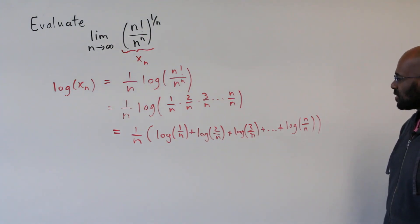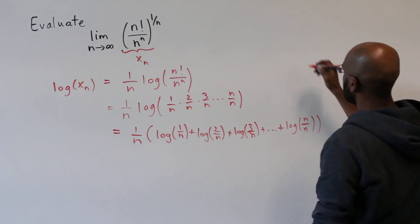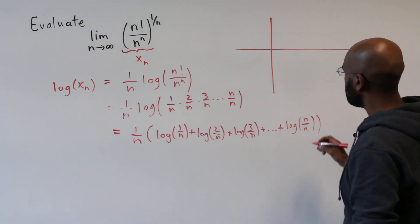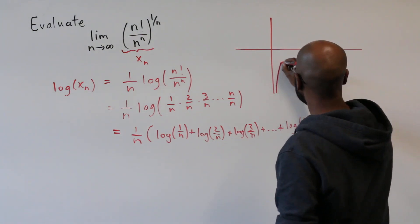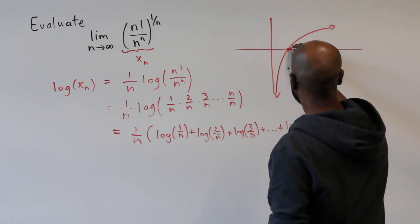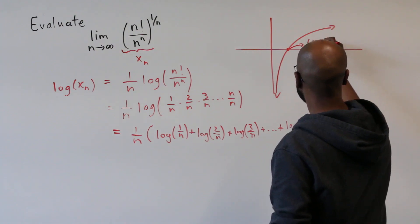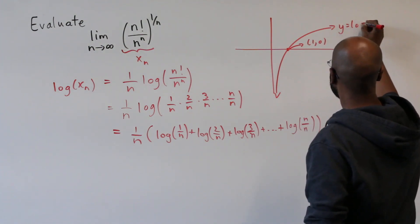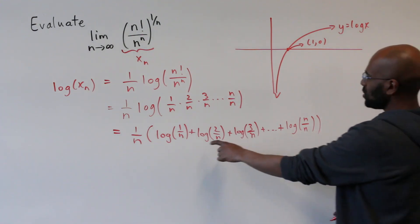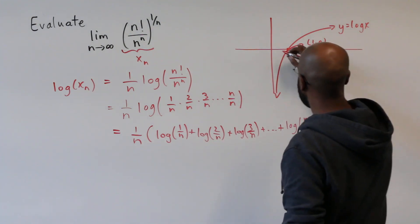OK, so what's going on with this sum? If we look at this, you can think about graphing the function logarithm of x that looks something like this, where we have here the point 1, 0. And what we're doing here is splitting the interval 0, 1 into n pieces.